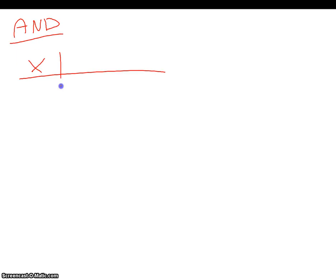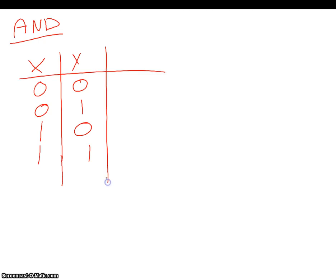Our second gate is the AND gate — slightly different. Again we have X and Y inputs and the same four possibilities: zero and zero, zero and one, one and zero, one and one. We'll have our output as Q. With the AND gate, we need X and Y to both be true in order for the output to be true. In our first instance, X is not true and Y is not true, so output is zero. Second, X is zero and Y is one — they're not both true, so output is zero. Third, one and zero — again not both true.